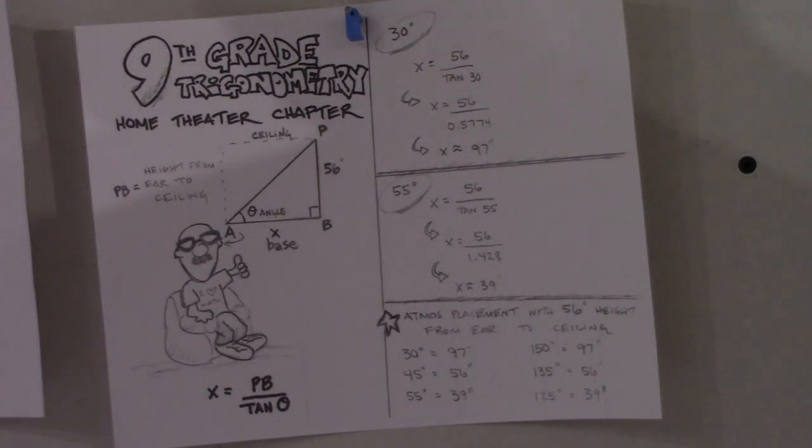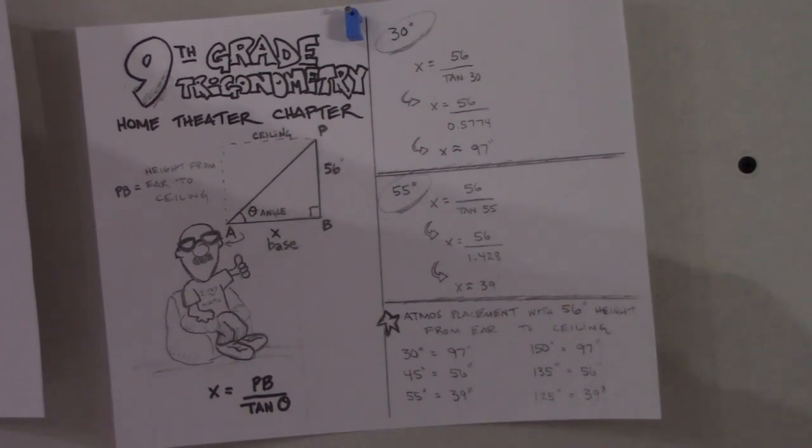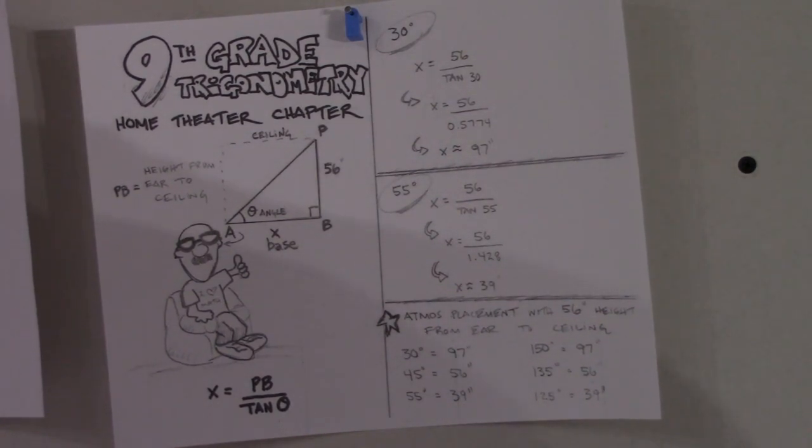This is how you do the Atmos placements. I'll leave this up for a couple of seconds so you can hit the pause button on your DVR or on whatever you're watching this on and you can see how the calculations are done if you have a scientific calculator or if you know how to do the stuff with a slide ruler. That's how you do it. Next you're gonna see a little fast forward of how we install the speakers, drill some holes. Thanks for tuning in.